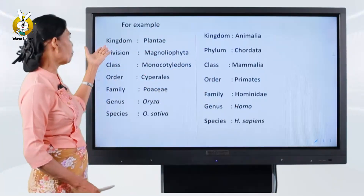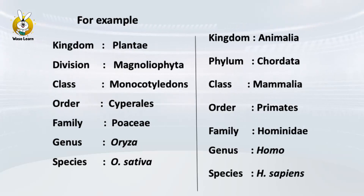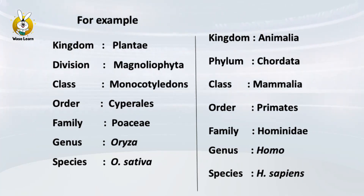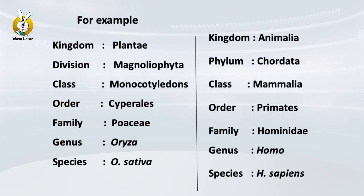The first thing we have is Plantae. We have Magnoliophyta, we have the class Monocotyledons, and we have a new species of Cyperales, a new order, a genus Oryza, and species Oryza sativa.